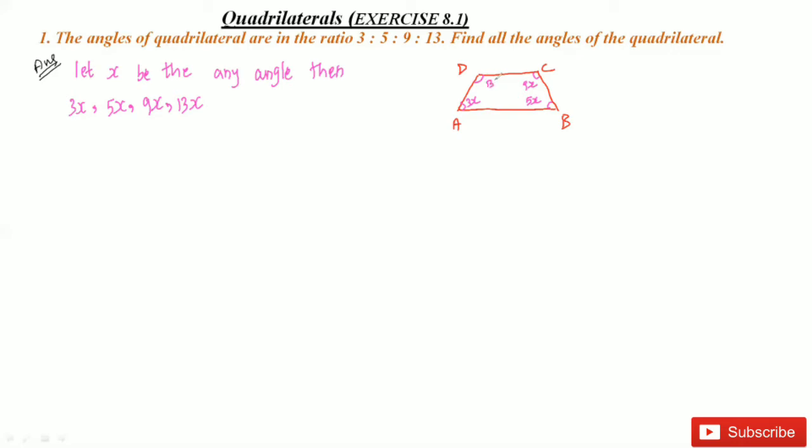Now we know very well what is the sum of all the angles of the quadrilateral. We know it's 360 degrees. So angle A plus angle B plus angle C plus angle D equals 360 degrees. This is the sum of all interior angles of a quadrilateral.